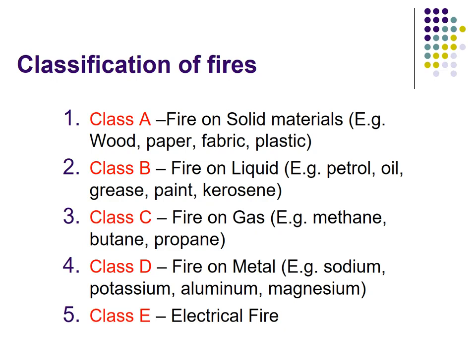Class D fire: fire on metals, for example sodium, potassium, aluminium, and magnesium. Class E fire: electrical fire.